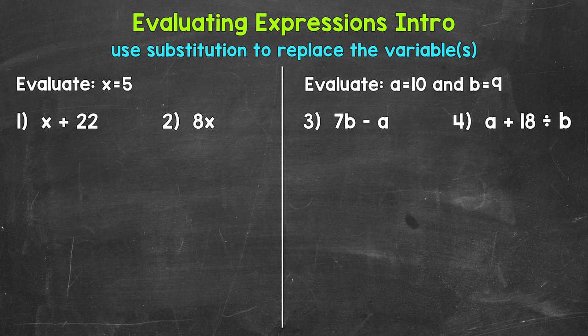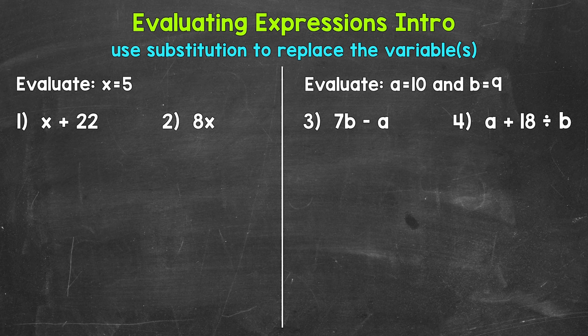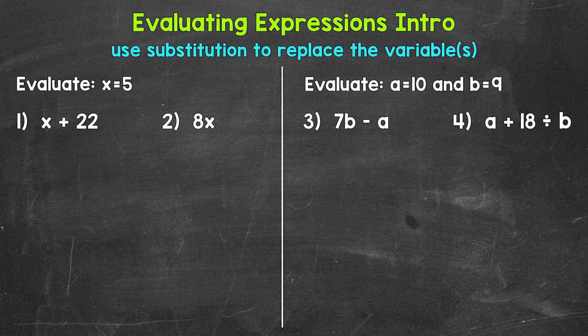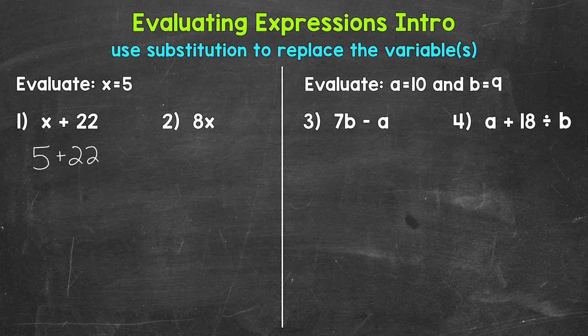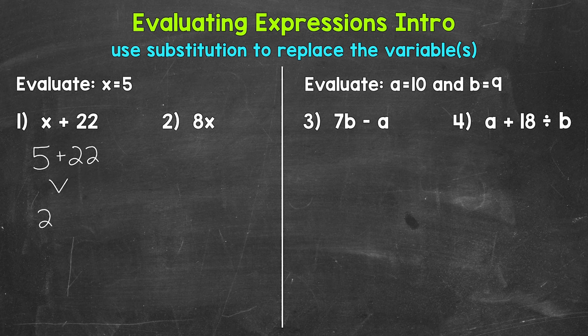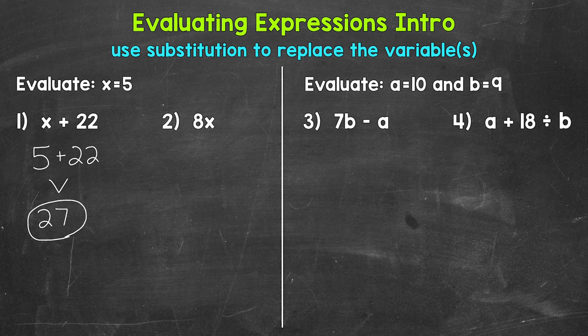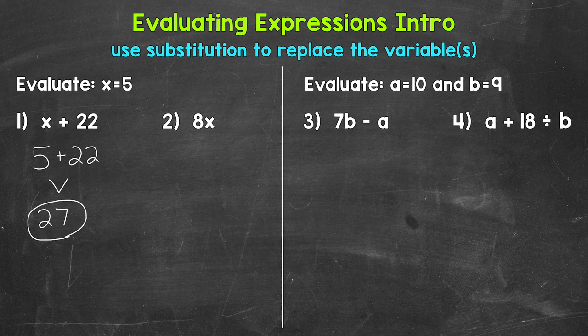Let's jump into number one, where we have x plus 22. For numbers one and two, we need to evaluate these expressions when x equals 5. The first thing we need to do is replace, or plug in, the given value for the variable. That's called substitution. So for number one, let's plug 5 in for x and rewrite this expression: 5 plus 22. Now we can evaluate. 5 plus 22 equals 27. So the value of this expression is 27 when x equals 5.